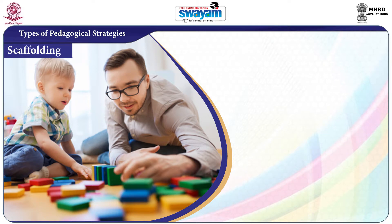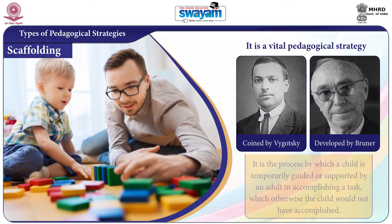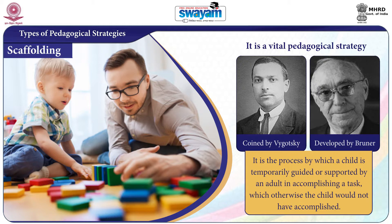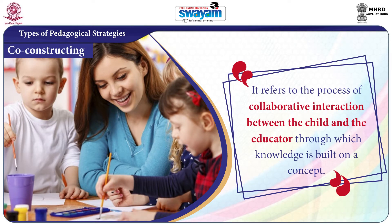Strategy 3 is Scaffolding — a very important and vital pedagogical strategy coined by Vygotsky and developed by Brunner. It is a process by which a child is temporarily guided or supported by an adult in accomplishing a task which otherwise the child would not have accomplished. Strategy 4 is Co-constructing — it refers to the process of collaborative interaction between the child and the educator through which knowledge is built on a concept.